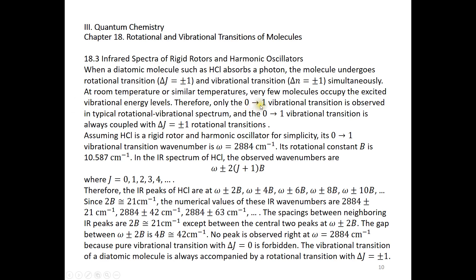Therefore, only the 0 to 1 vibrational transition is observed for most molecules at typical temperatures in a typical rotational-vibrational spectrum. The 0 to 1 vibrational transition is always coupled with the delta J equals plus or minus 1 rotational transitions.